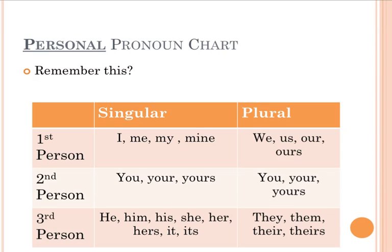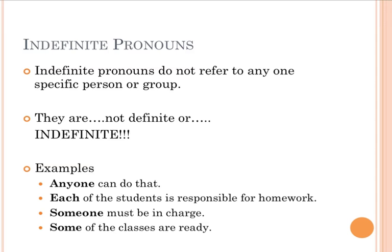Make sure you understand the difference between first person, second person, third person, and the columns of singular and plural. If you don't remember those, revisit our other podcast. Now, the focus of this podcast is indefinite pronouns. Indefinite pronouns do not refer to any one specific person or group — they are not definite. Using the prefix that means 'not,' they are indefinite.